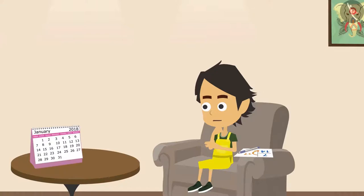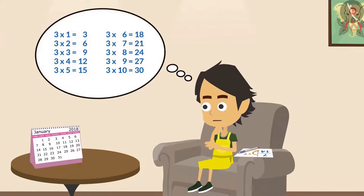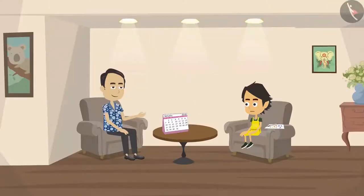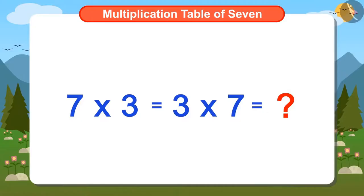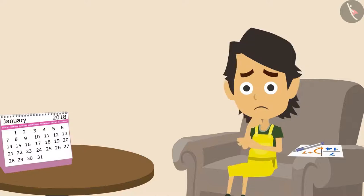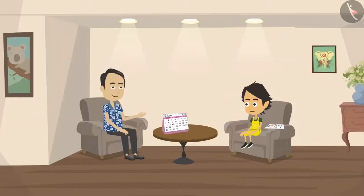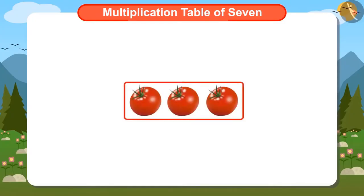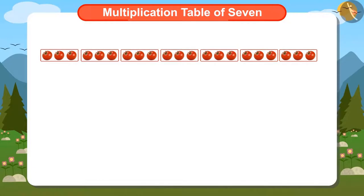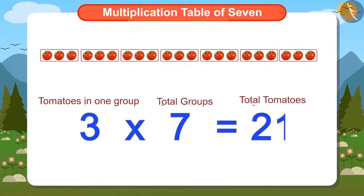Ayushman started thinking: if I know the multiplication table of 3, how can I find the answer to 7 multiplied by 3? Papa told Ayushman that the answer to 7 multiplied by 3 would be the same as 3 multiplied by 7. Papa explained that if he makes 7 groups of 3 tomatoes each, then to find the total number of tomatoes, he can multiply 3 by 7 and find that there are 21 tomatoes.